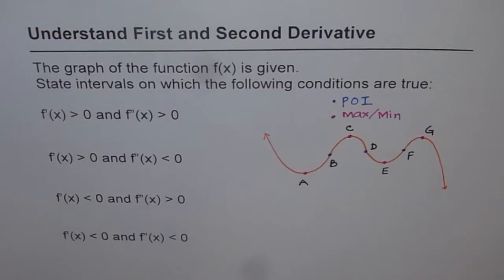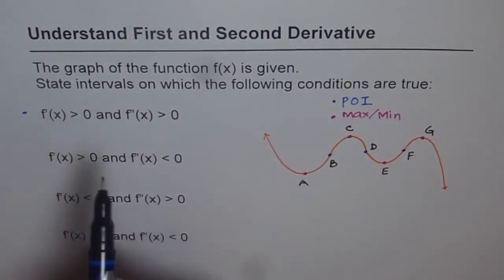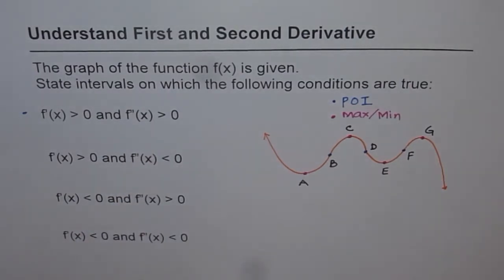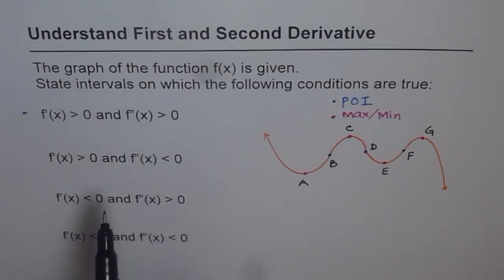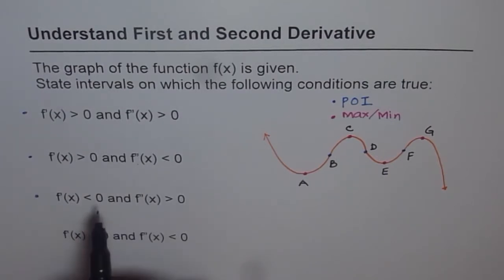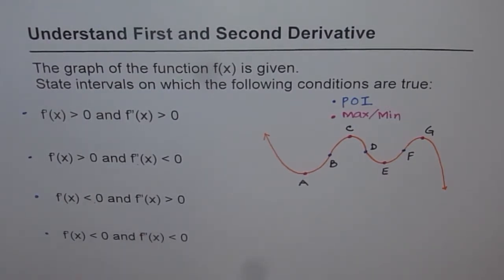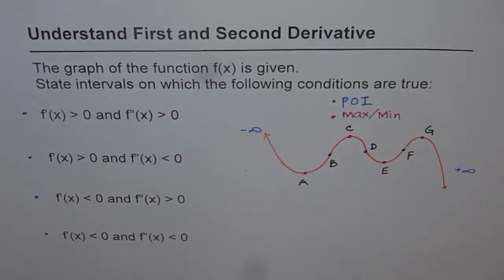Now let's go through these one by one and answer the questions. The four conditions are: first, both f'(x) and f''(x) are greater than zero — both derivatives positive; second, f'(x) is positive but f''(x) is negative; third, f'(x) is negative and f''(x) is positive; and fourth, f'(x) is negative and f''(x) is also negative. You can pause the video, answer the questions, and then check my solution. You can use negative infinity and positive infinity to write the intervals.